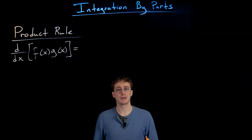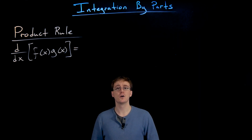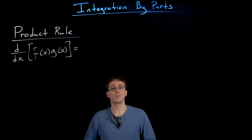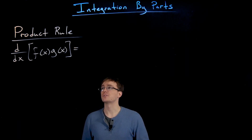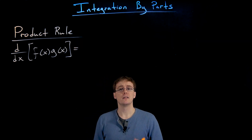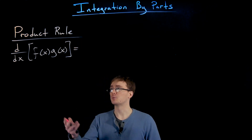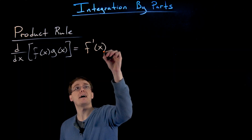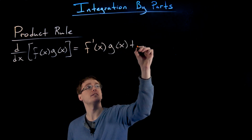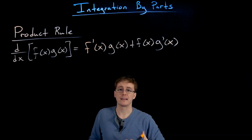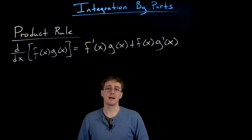To derive our integration by parts formula we're going to start with the product rule, use that and the fundamental theorem of calculus, and the idea that derivatives and antiderivatives are inverses or undo one another. The product rule says that if we want to differentiate the product of two functions f and g, the derivative of f times g equals f prime times g plus f times g prime.